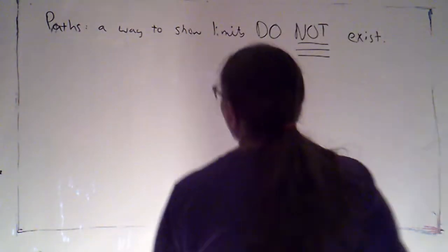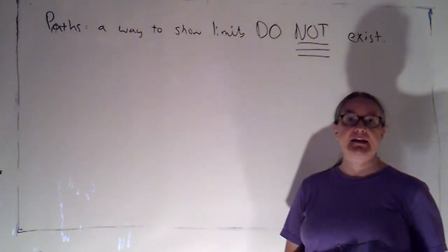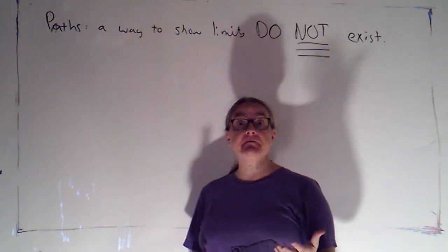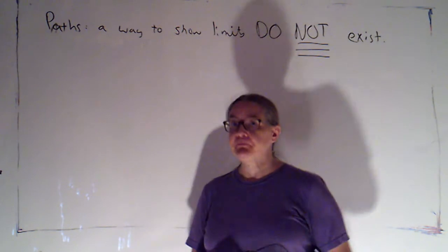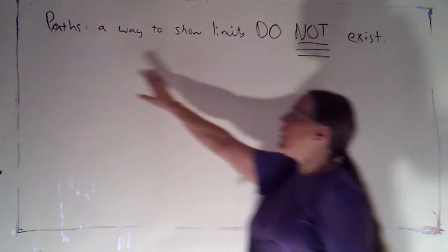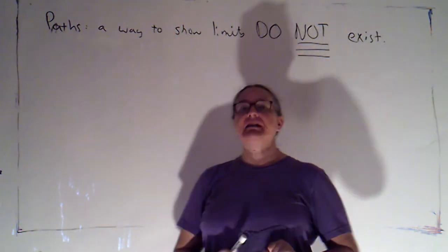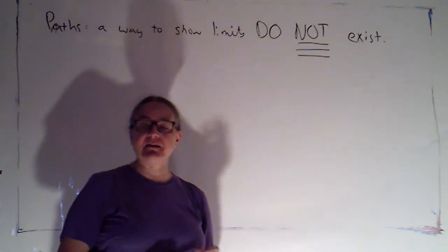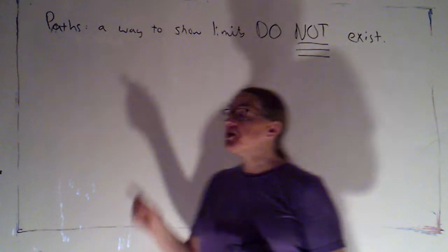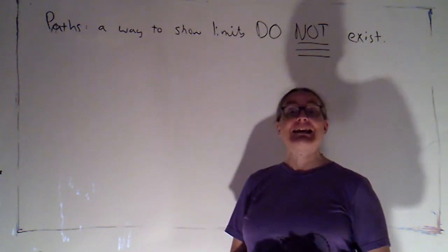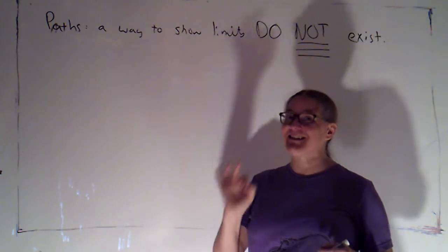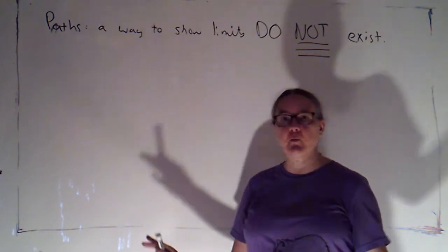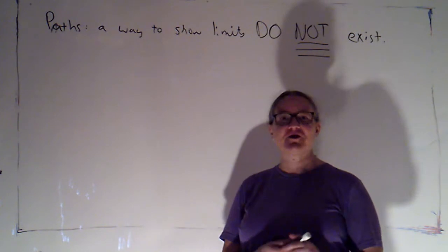The techniques we've looked at so far are useful for evaluating a limit. We've seen that sometimes they show us the limit exists and allow us to say it is this number, and sometimes they've led us to conclude that the limit does not exist. What we're going to look at now is a technique called paths. That is only a technique for showing that limits do not exist — it is not a method for showing that a limit does exist. So if you're going to use paths, you are first making an educated guess that the limit doesn't exist and you're trying to prove that. If you're trying to use paths to prove that a limit exists, it is hopeless, because it is not a valid technique for showing that a limit exists.